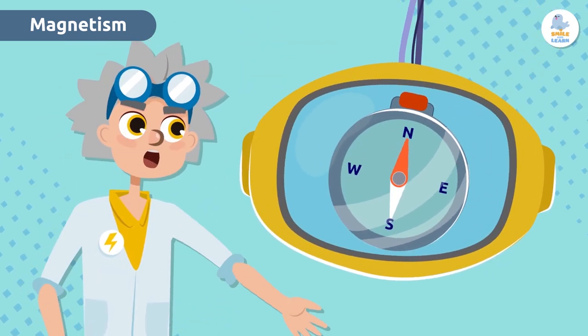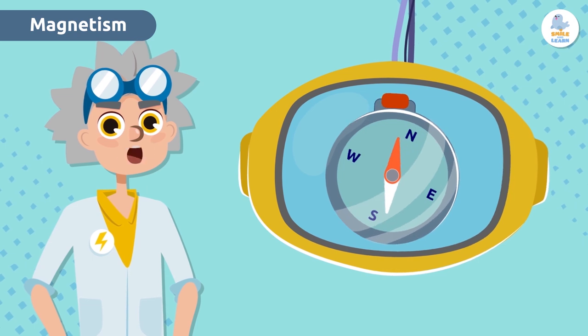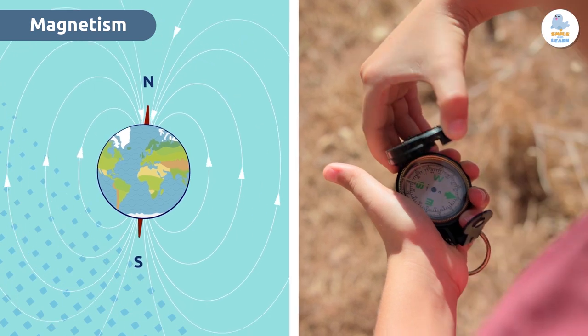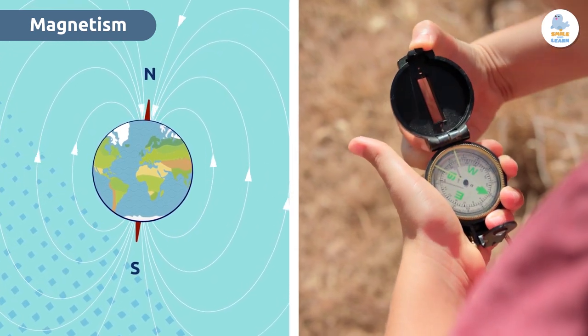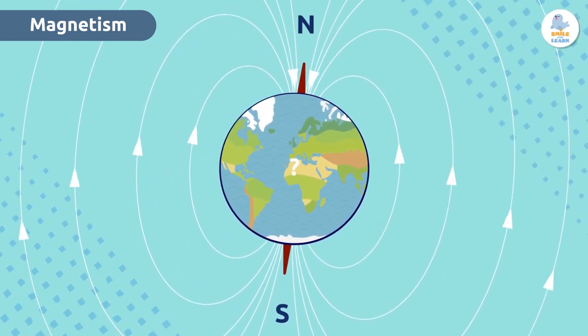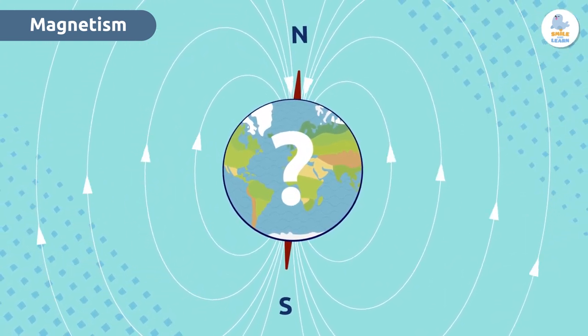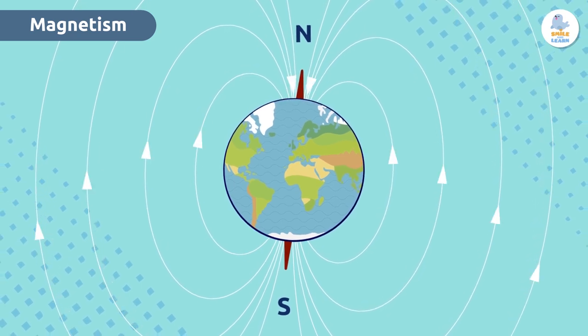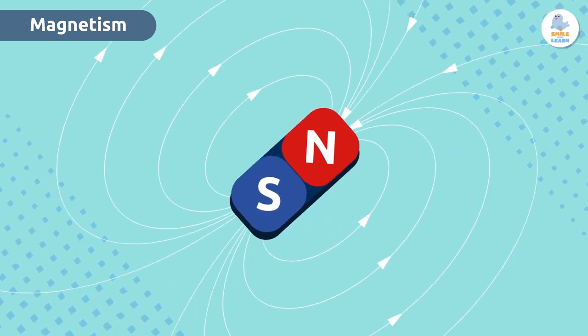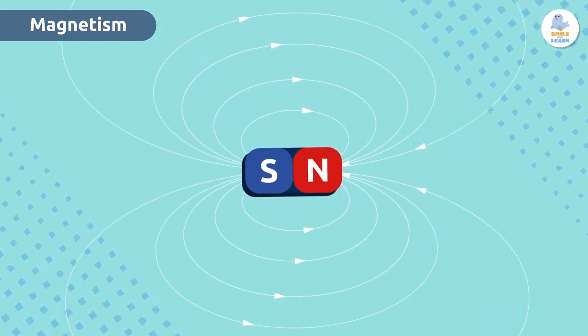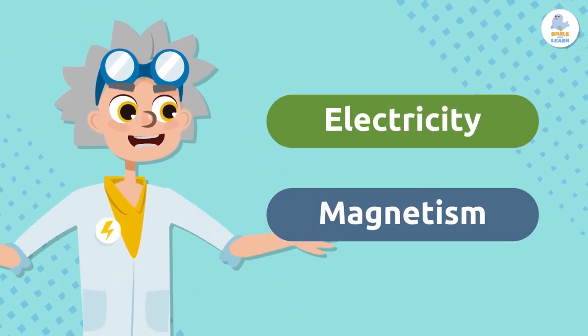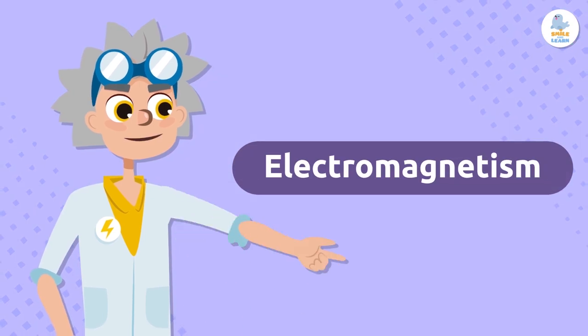Have you ever used a compass to orient yourself? A compass uses a magnetized needle that always points to the Earth's magnetic north pole, which allows us to locate ourselves on a map. And do you remember what a magnetic field is? Exactly! It is the space surrounding a magnet where its magnetic force acts. In other words, it is the space where a magnet can attract other metals. Now we are ready to learn what electromagnetism is. Here we go!